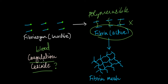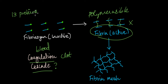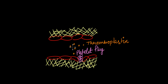Coagulation and clot basically mean the same thing — it's a clotting cascade or the coagulation cascade. How does this coagulation cascade work? There are around 13 proteins involved in this cascade. It's quite a complicated process, but for simplicity let's focus on a few of those proteins. One such protein is known as thromboplastin, which is released by the broken endothelial cells.